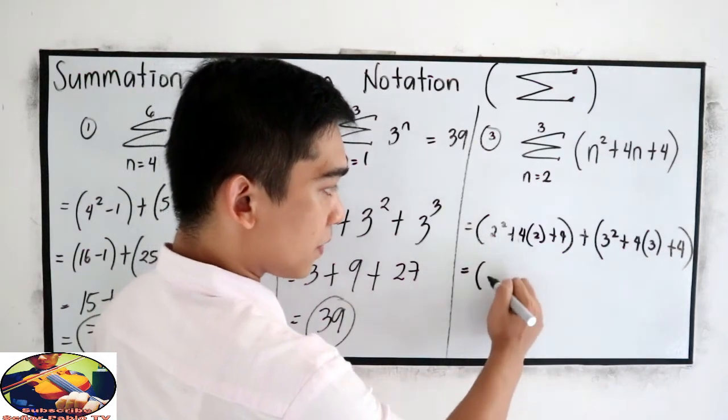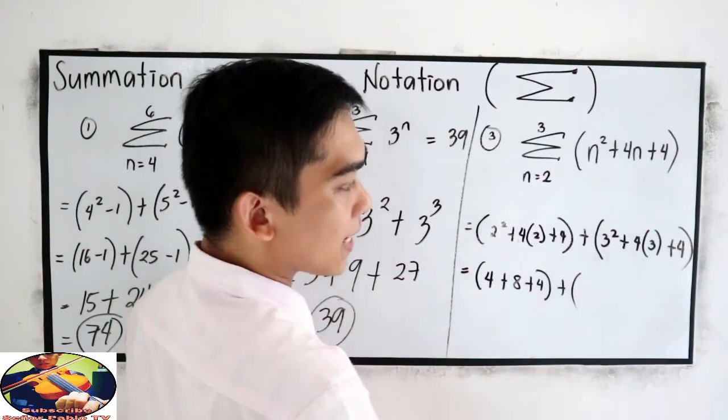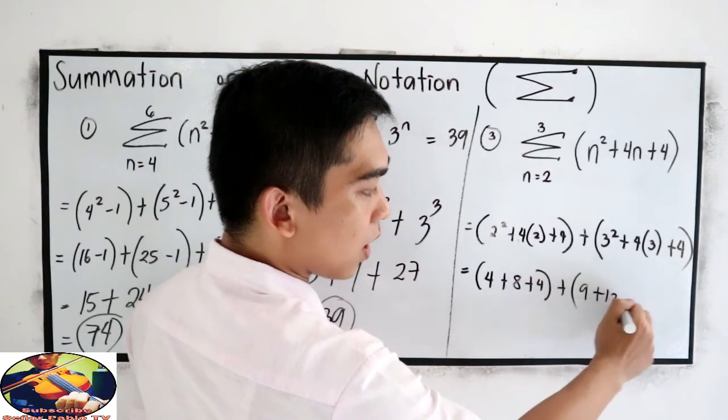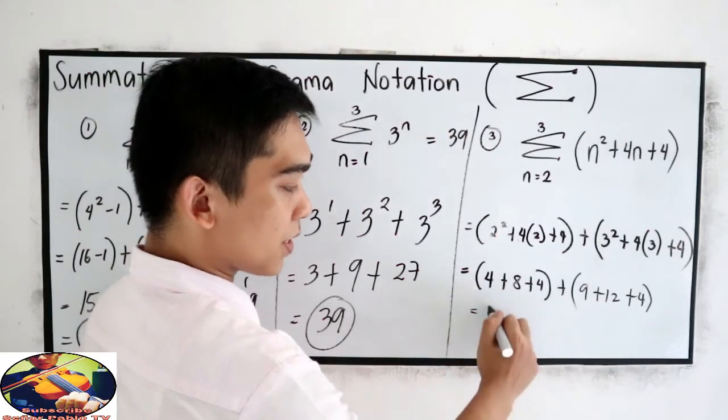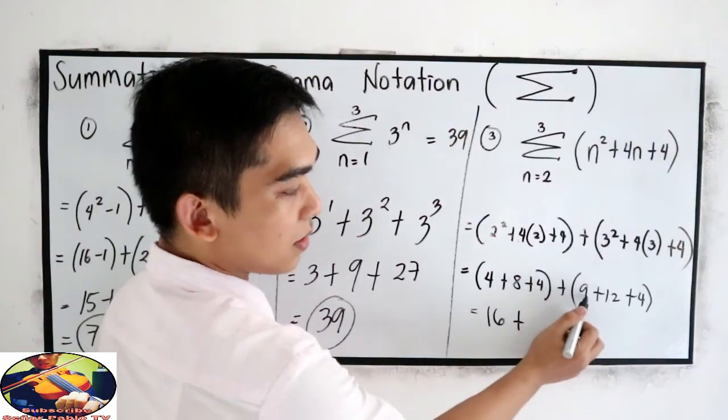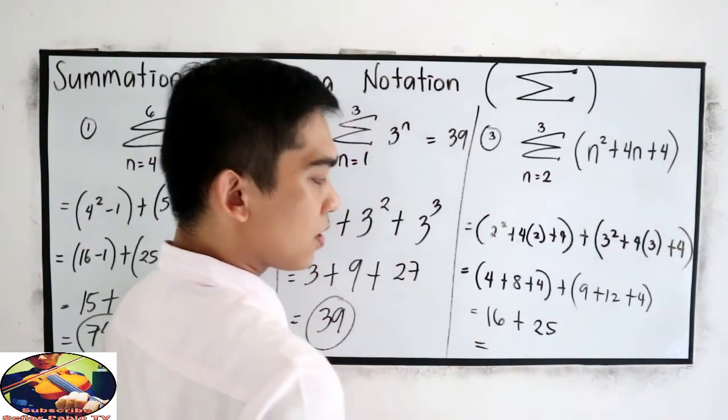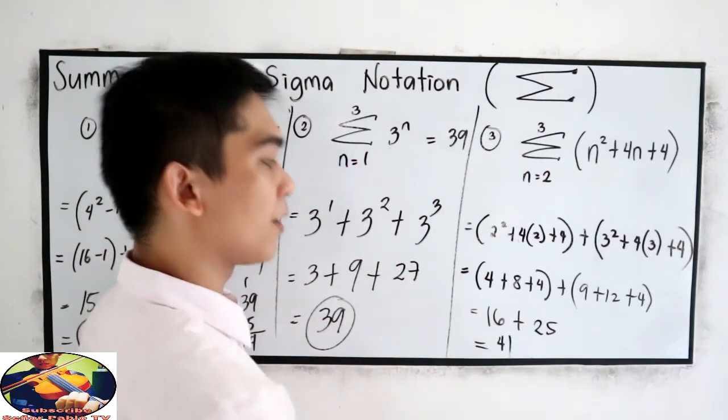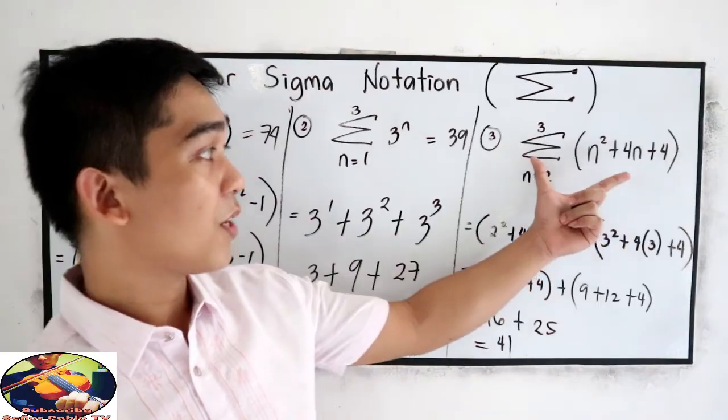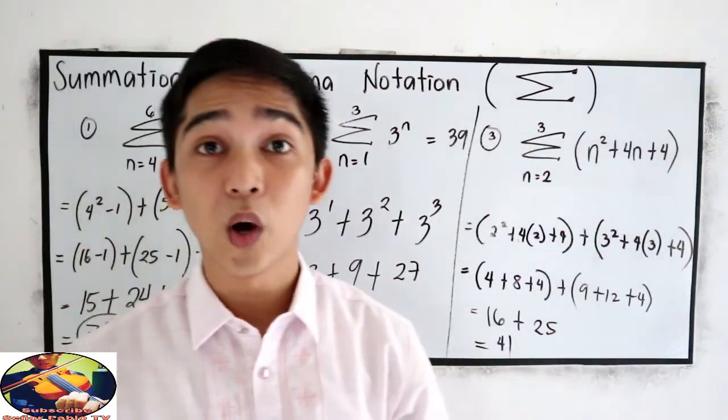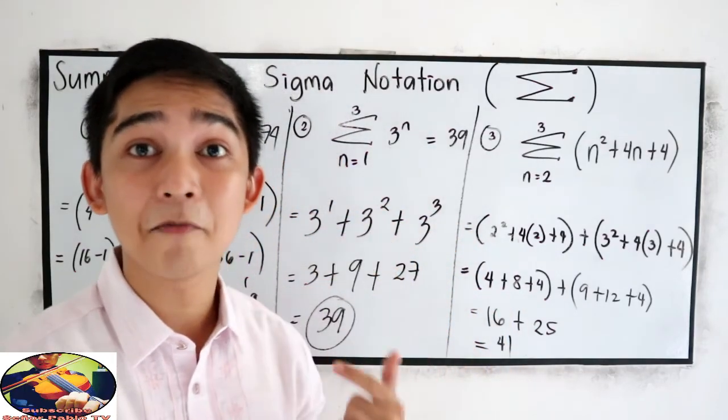2 squared, that is 4, plus 4 times 2 is 8, plus 4, plus 3 squared is 9, plus 12, plus 4. 4 plus 8 is 12, plus 4 is 16. 9 plus 12 is 21, plus 4 is 25. So let us add: 16 plus 25 is 41. So the sigma notation for this expression is 41.